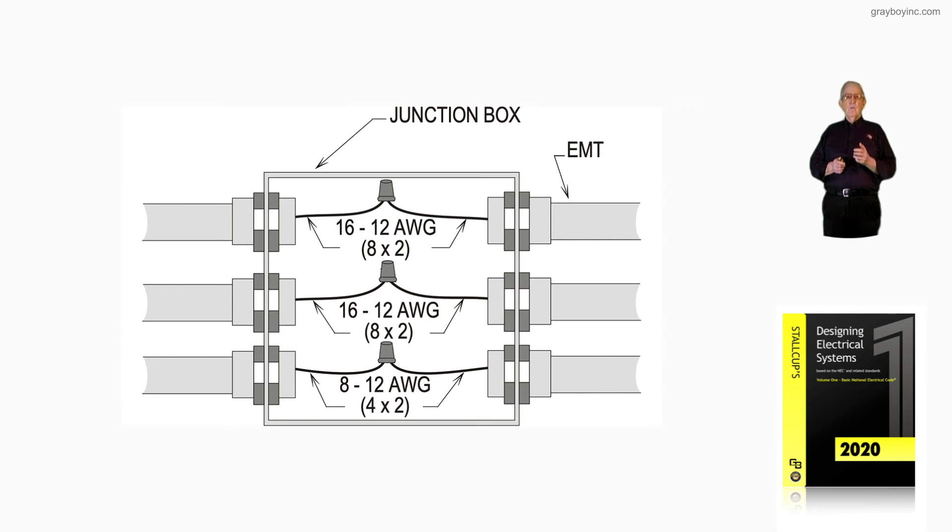The same below, we have 16 number 12, so two of them, one from each side coming in would be 16. And then we would have eight number 12, so that would be 2 times 4 in this case, and we would come up with the 8 that you see there. So with this knowledge, by reviewing what's in the box, we can now go to figure 12-15B and do the calculation inside the junction box.